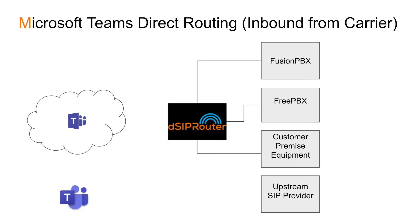First, we'll configure the upstream SIP provider to communicate with DSIP Router. DSIP Router will be configured to communicate with the team's infrastructure. The team's infrastructure will then route the call down to my team's client. In previous videos, I primarily focused on how easy it is to set up DSIP Router to communicate with Microsoft Teams. Today, I'm going to focus on how to configure a carrier to route into DSIP Router.